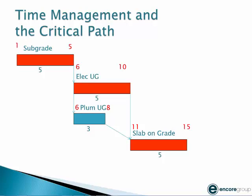Now, what the scheduling software will do is start with the very last activity — or any activity that does not have a successor — and begin counting backwards from 15. If that activity is going to finish on 15, then it has to start on day 11. If it's going to start on day 11, then those previous two activities both have to finish by day 10. If the electrical is going to finish by day 10, it will have to start on day six. The plumber, if it's going to finish on day 10, will have to start on day eight. The subgrade will have to finish on day five and start on day one. The computer then takes the difference between either the start or finish: the slab on grade has zero float, the electrician has zero float, the plumber has two days of float, and the subgrade has zero days of float.